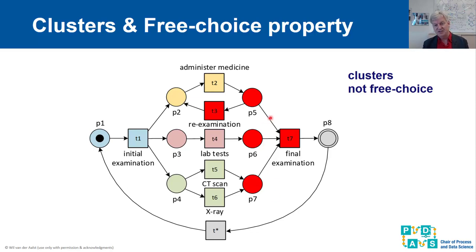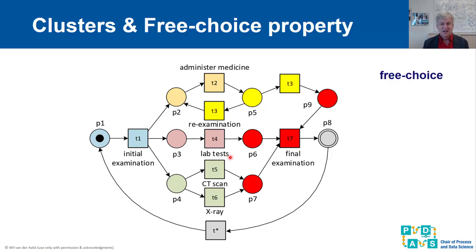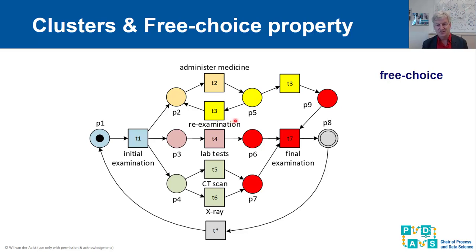Nets that are not free choice have constructs where choice and synchronization are somehow mixed. Here we are synchronizing with T7, but at the same time there is a choice that is not free — not symmetric. If we add transitions T3A and T3B in place of T3, where T3A loops back and T3B ends the process, now the net becomes free choice and the original red cluster splits into two clusters.